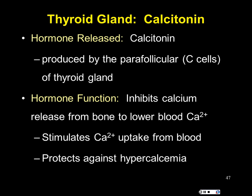Calcitonin brings blood calcium levels down. It is antagonistic to parathyroid hormone, which brings calcium back up. The parathyroid glands are small pink nodes on the posterior side of the thyroid gland. Parathyroid hormone, PTH, is also humorally regulated — but by decreased blood calcium levels. PTH causes bones to release calcium, kidneys to reabsorb calcium, and intestines to absorb calcium, effectively bringing blood calcium back up to set point range.